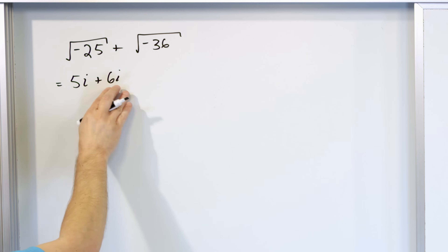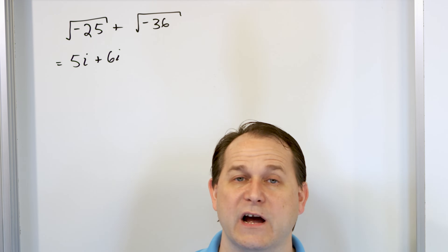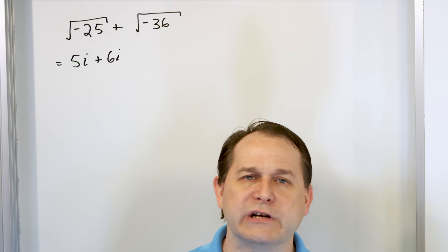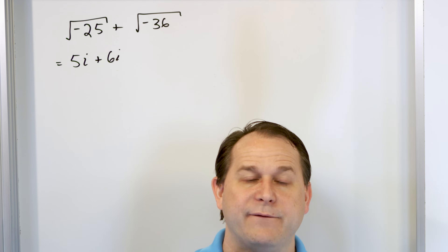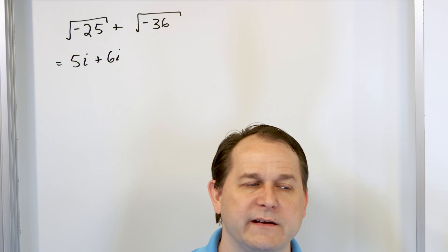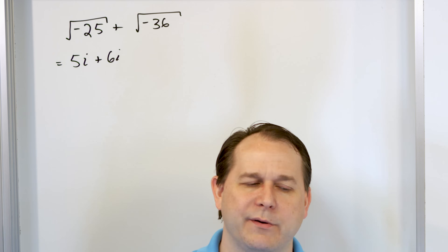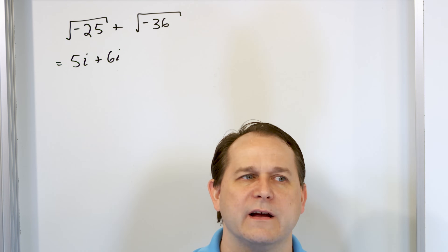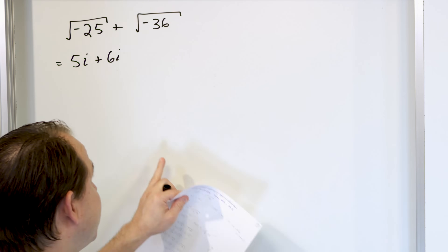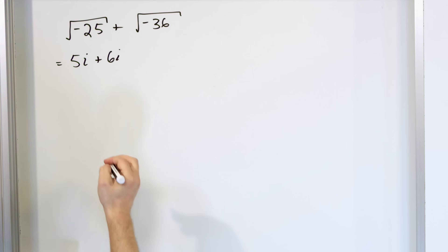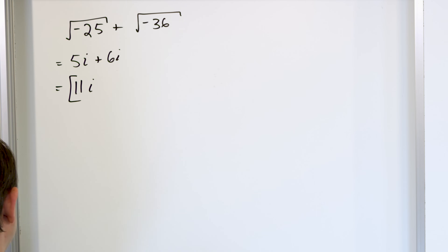Now when you're at this step, you're adding two imaginary numbers together and the rule of thumb is exactly the same as for any expression: you can only add imaginary numbers together if they both have an i. If one has an i and one doesn't, you can't combine them — like 2 plus 5i can't be simplified further. Just like variables, everything has to match. i and i match, so we get 11i. That's the final answer.